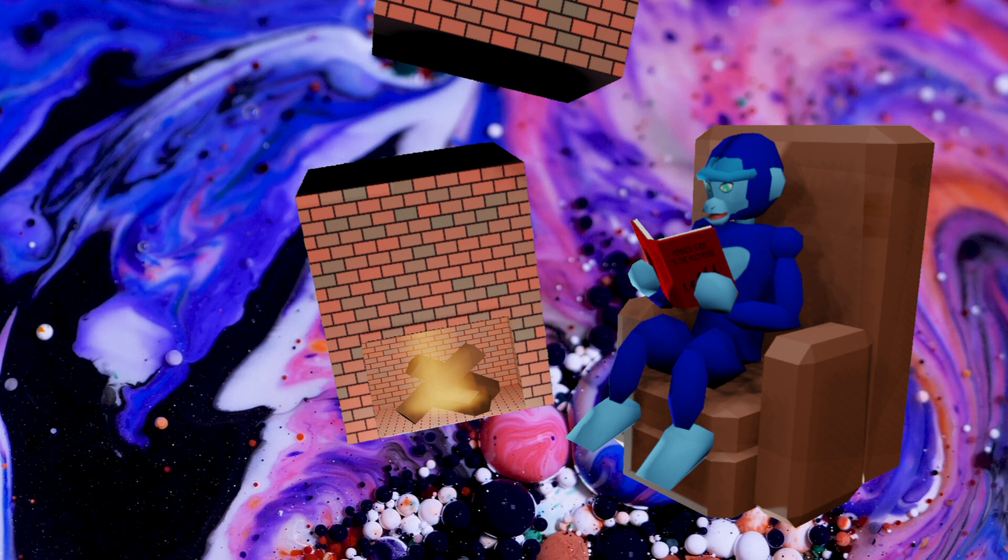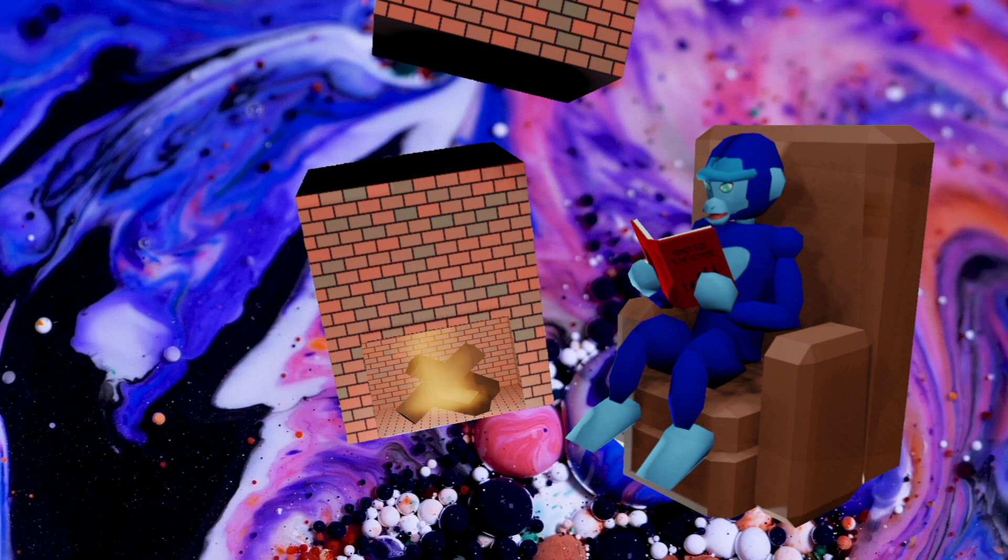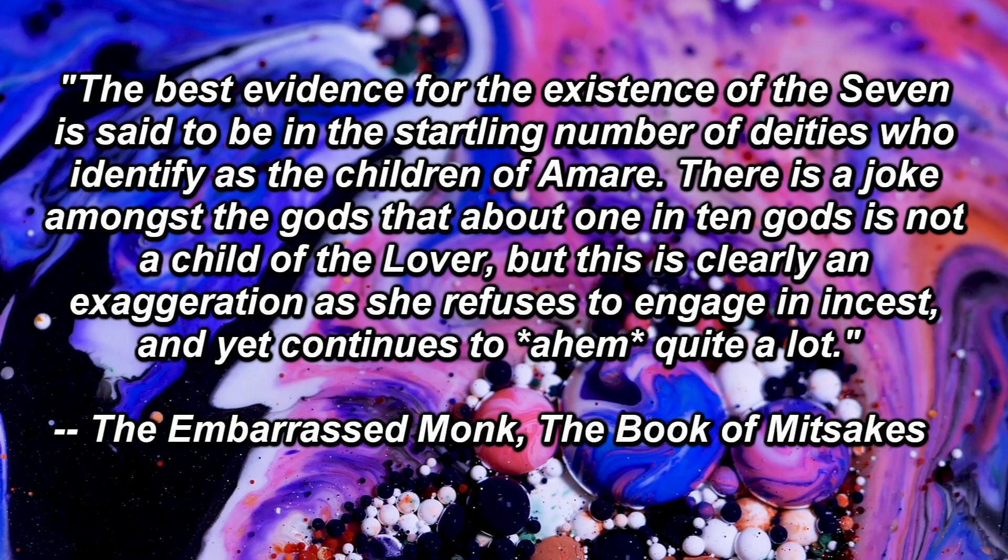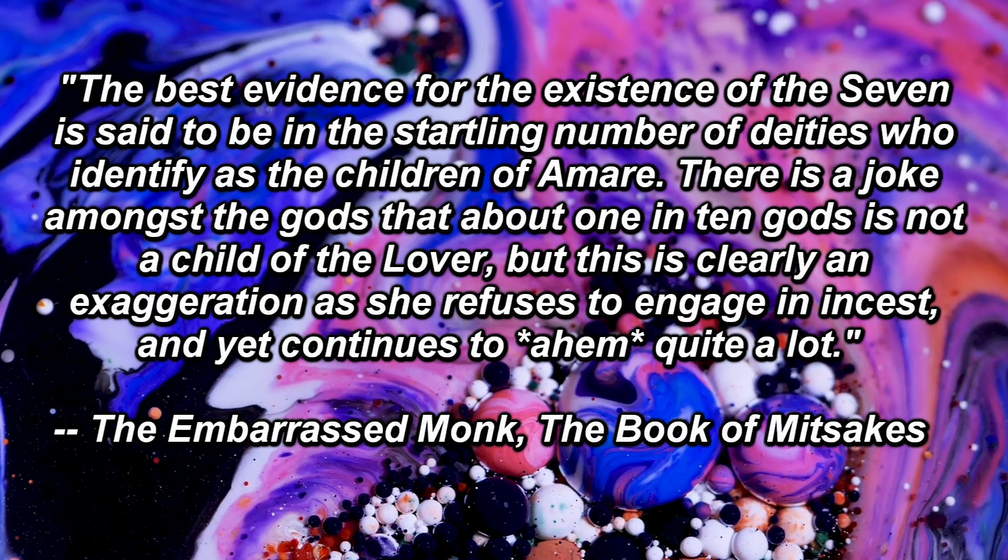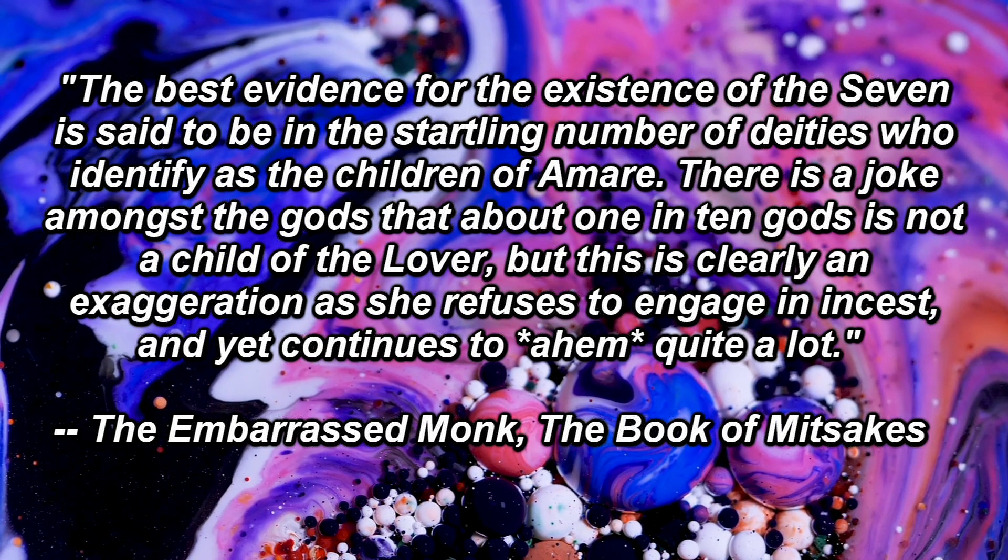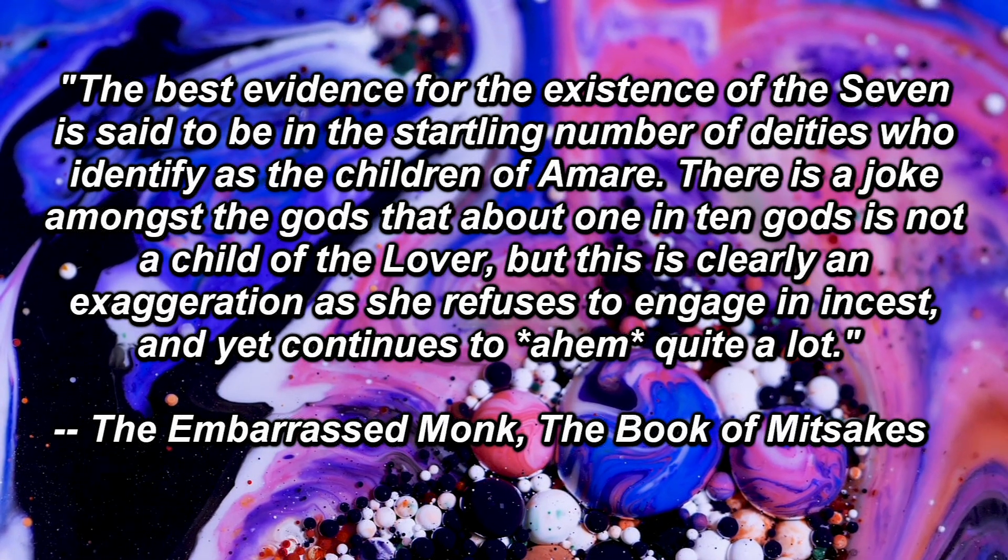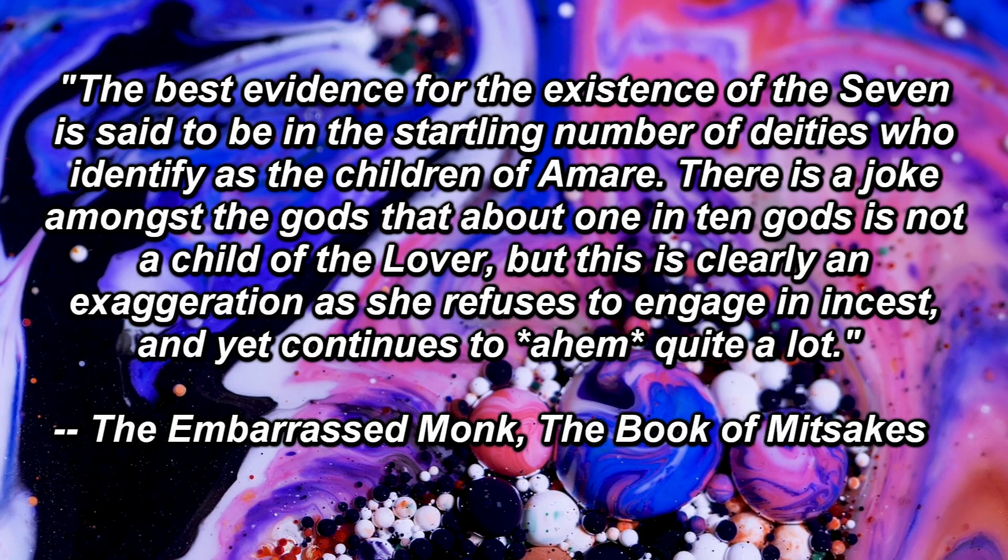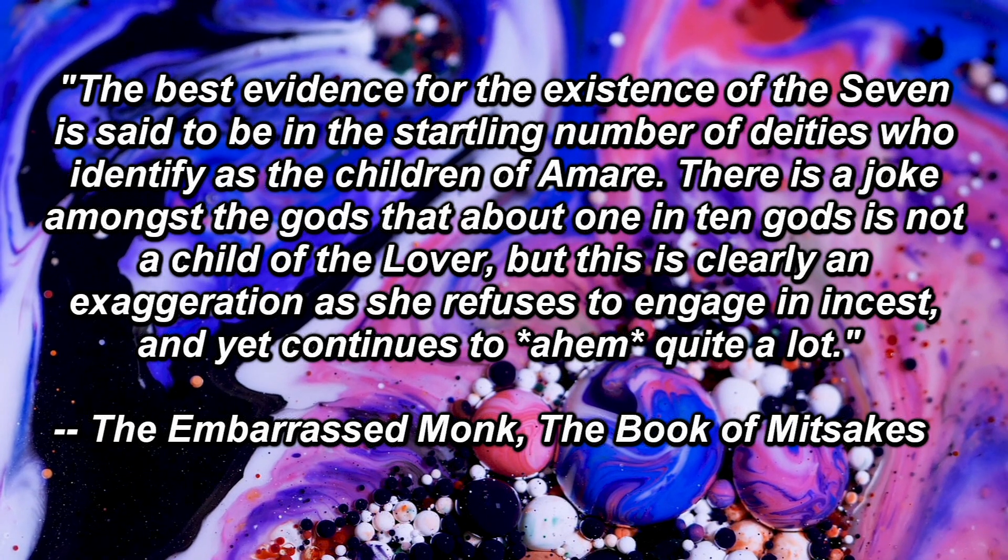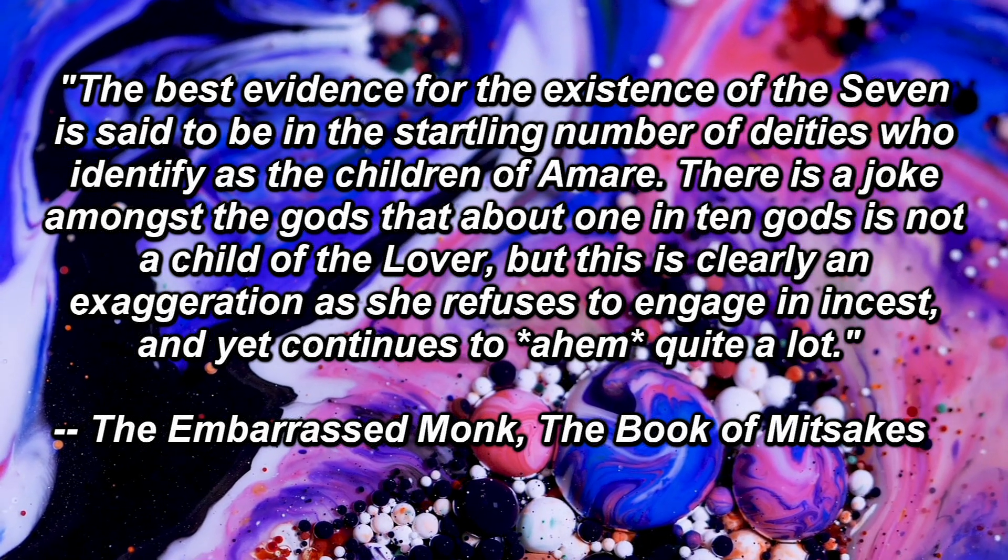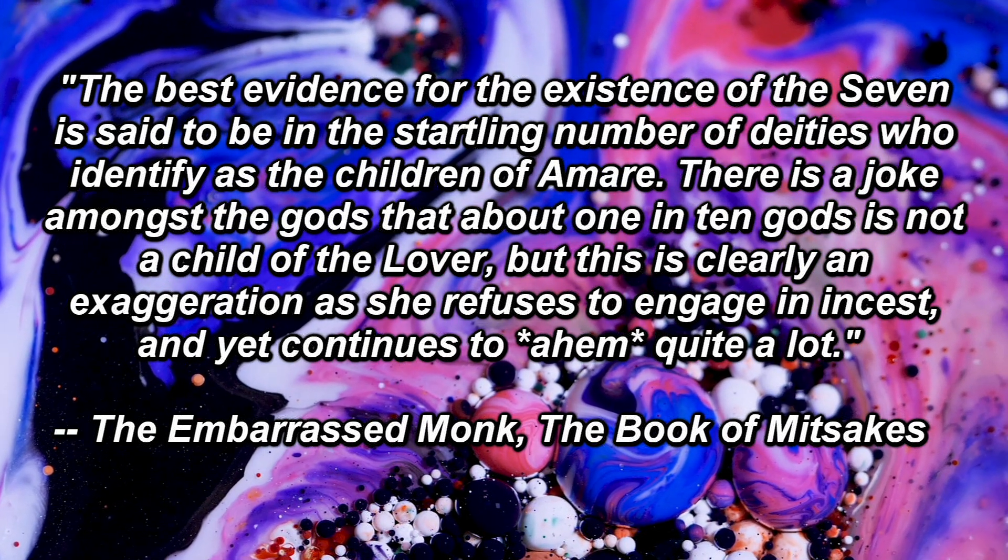She is even less picky about her partner's genders, but always sticks to other deities rather than mortals, and never engages in incest. The best evidence for the existence of the Seven is said to be in the startling number of deities who identify as the children of Amari. There is a joke amongst the gods that about one in ten gods is not a child of the lover, but this is clearly an exaggeration, as she refuses to engage in incest, and yet continues to have quite a lot. The Embarrassed Monk, the Book of Mythsakes.